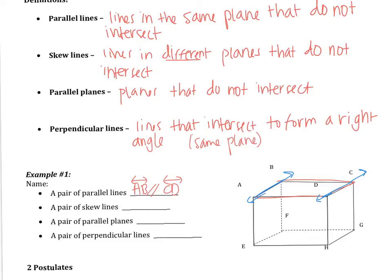Skew lines — this is the one that's different. Skew lines require us to look at different planes. We're still going to look at that red plane at the top and now look at the bottom plane. If we stick with line AB, I need to pick a line that is skew to AB. If I look at EF, that's actually going to be parallel — both of those lines are on the left plane. But EH and AB are on different planes and they do not intersect, so AB and EH are skew. There's no symbol for skew. Remember to write a line appropriately: pick two points on the line and put a line over the top.